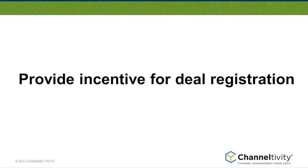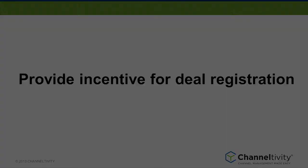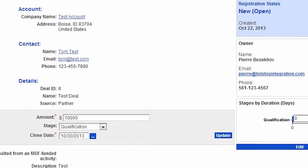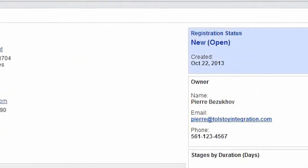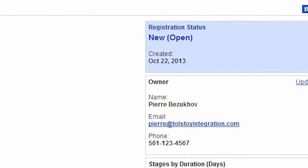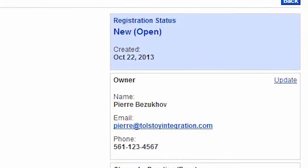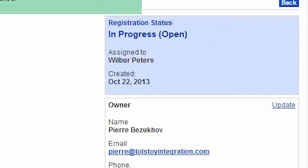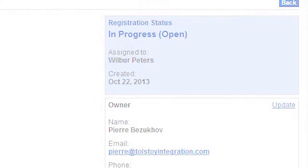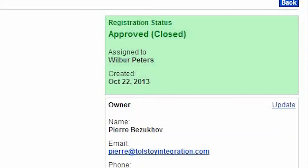In order for your partners to be active participants in your deal registration program, you need to provide an incentive for them to register deals, which is the second best practice. In most deal registration programs, registered deals receive better pricing, support during the sales process, and so on. Channeltivity supports this process by providing a central record of deal registrations, along with joint sales collaboration and communication functionality. Each deal registration is taken through a review and approval process, leaving a digital paper trail. The workflows can be customized to fit your particular program needs.